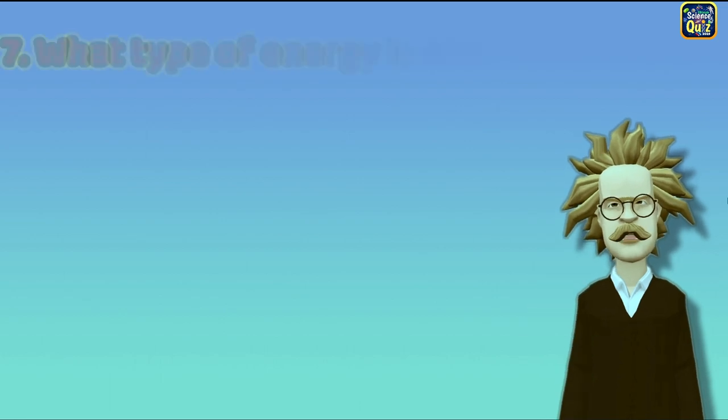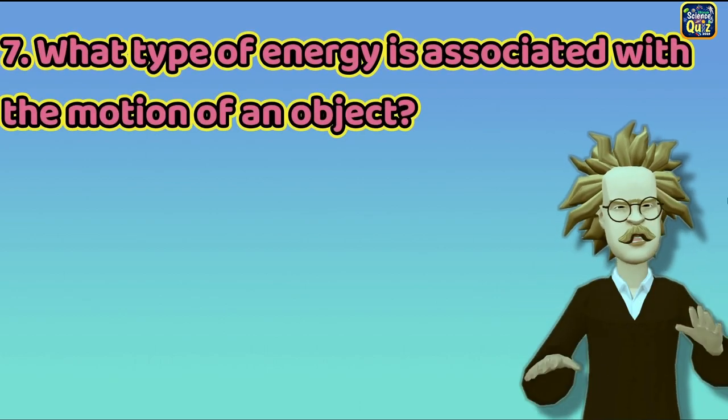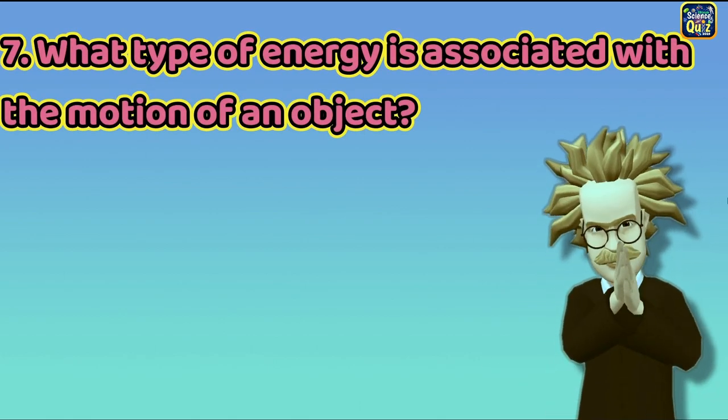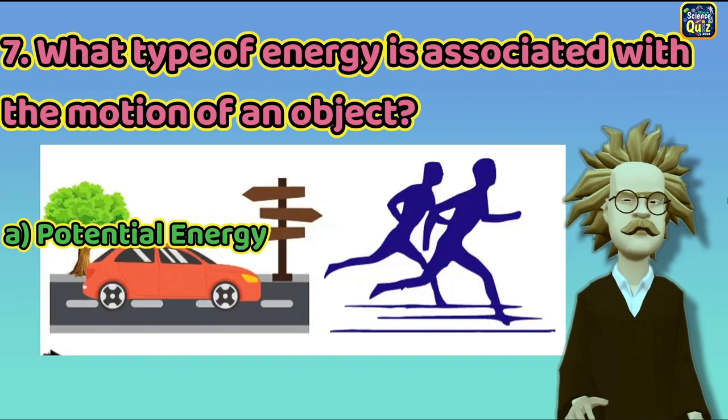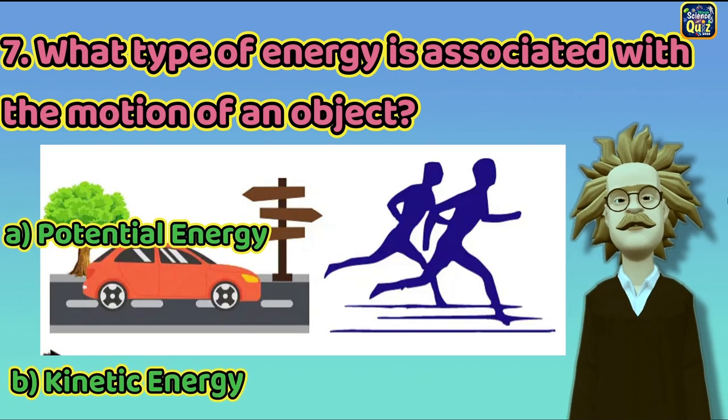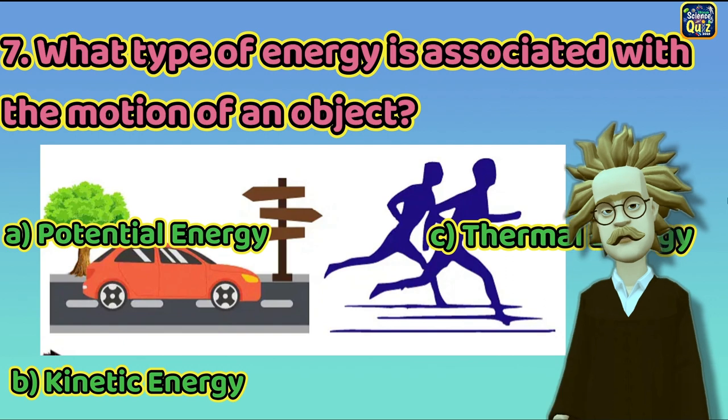Question 7: What type of energy is associated with the motion of an object? A. Potential energy, B. Kinetic energy, C. Thermal energy.